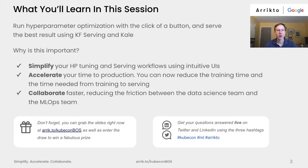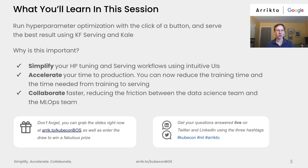The primary use case we're going to cover is hyperparameter optimization, which is the ability to search across a wide variety of parameters to find the parameters that will create the best model. We're going to learn about simplifying your hyperparameter tuning as well as your serving workflows with intuitive UIs. The benefit is that you will accelerate your time to production, with reduced training time and reduced time to build a process — getting to the answers and deployment faster. We'll also cover collaboration, reducing friction between the teams that build the model and the teams that deploy it.